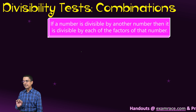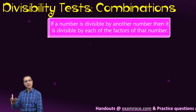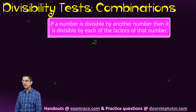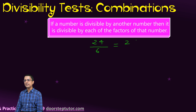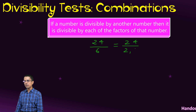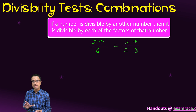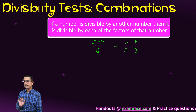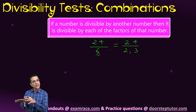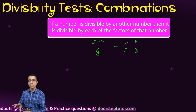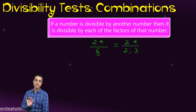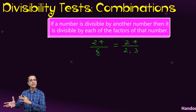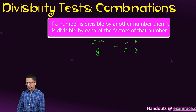The next rule states that if a number is divisible by a given number, it will also be divisible by each of the factors of that number. For example, if 24 is divisible by 6, it would also be divisible by 2 and by 3. Here we are not constrained by co-prime factors — we simply say that if 24 is divisible by 6, it will be divisible by all its factors.